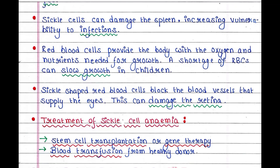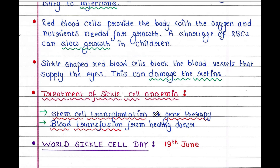The treatments for sickle cell anemia include stem cell transplantation, gene therapy, and blood transfusion from a healthy donor. Do you know when World Sickle Cell Day is? It's on 19th June. This is all about today's lecture. I hope you liked it. If you want to get the PDF notes of this topic, please check the description box or the first pinned comment. Thank you.